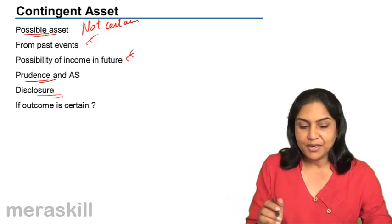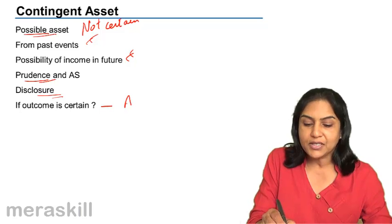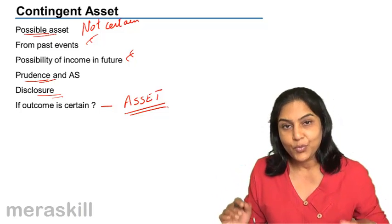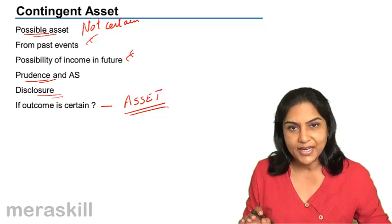And as I said before, if an outcome is certain, then it actually becomes an asset and we recognize it as an asset when such change occurs, when it becomes a certainty.